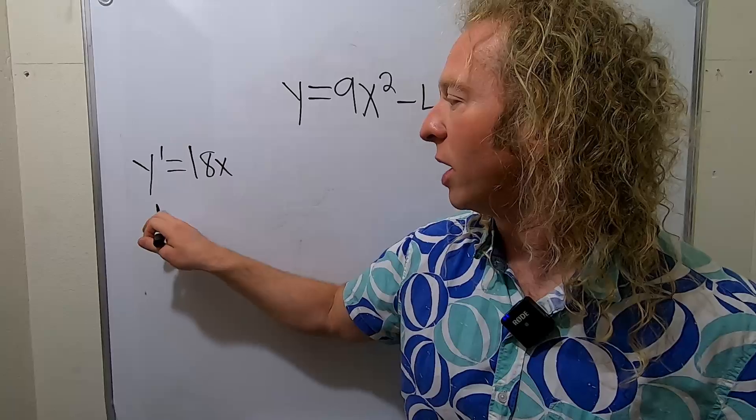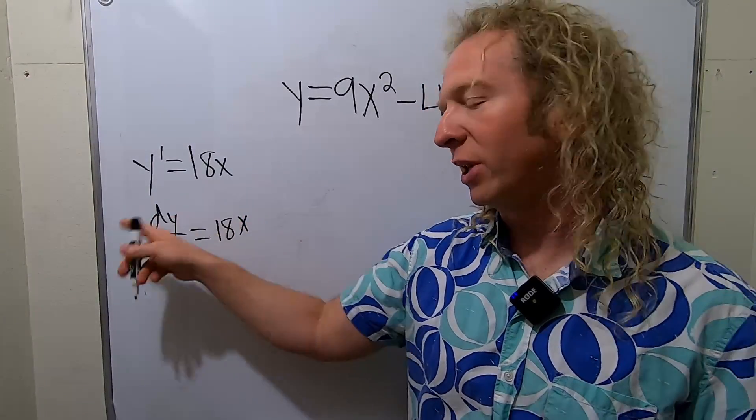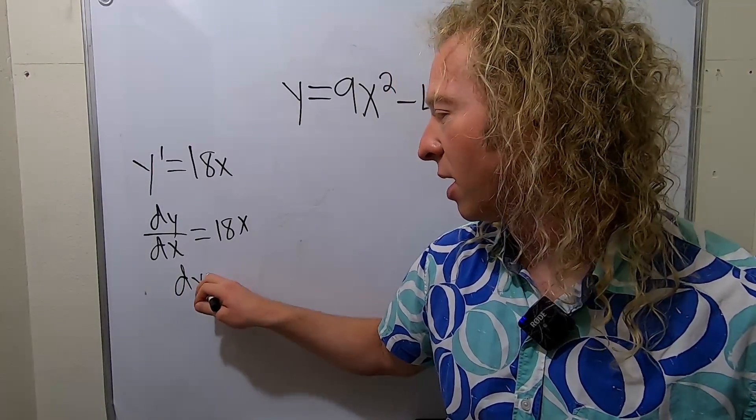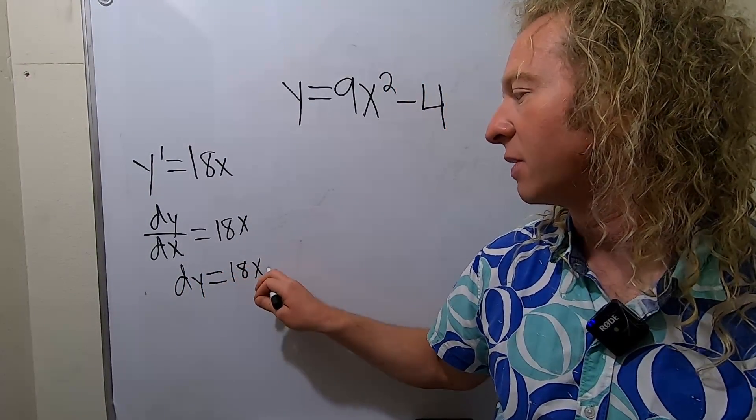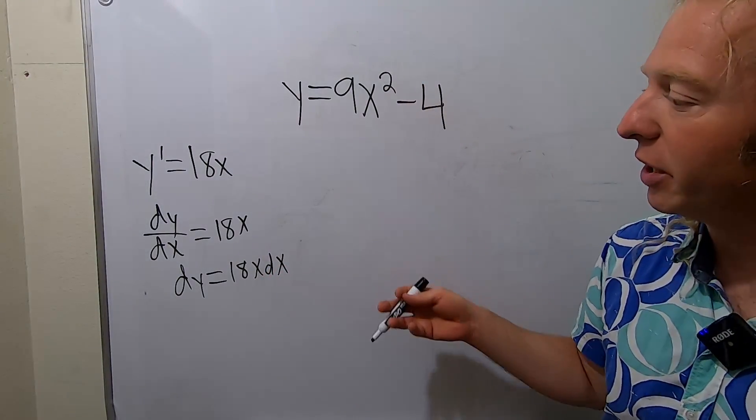it would be dy/dx equals 18x. And if you allow yourself to be abusive and multiply by dx, you get dy equals 18x dx, and that's actually the answer to this problem.